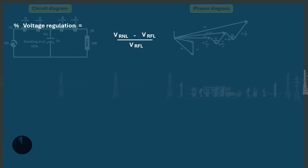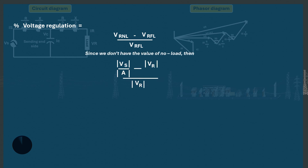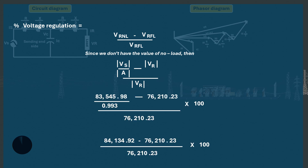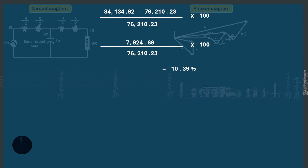The voltage regulation of the line can now be determined. Using the formula: receiving end voltage at no load (VRNL) minus receiving end voltage at full load (VRFL), all over VRFL multiplied by 100. Since we don't have the no-load value directly, we apply the formula: absolute of VS over absolute of A, minus absolute of VR, all over absolute of VR, multiplied by 100. The result is 10.39%.